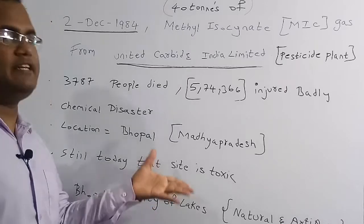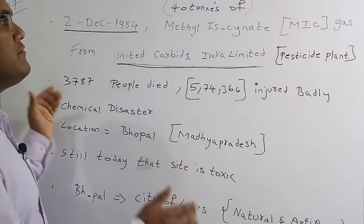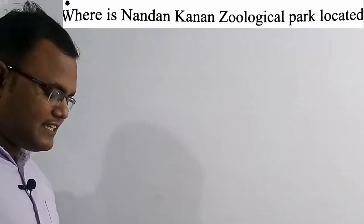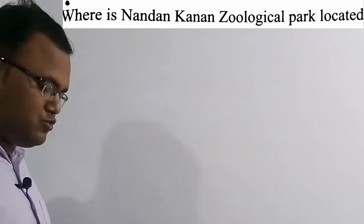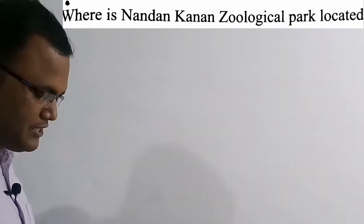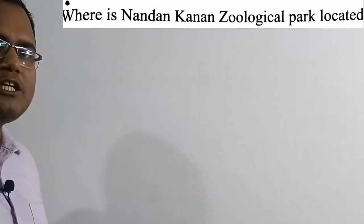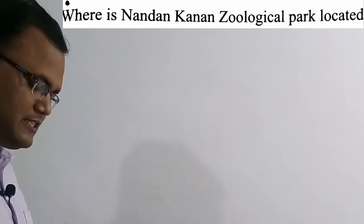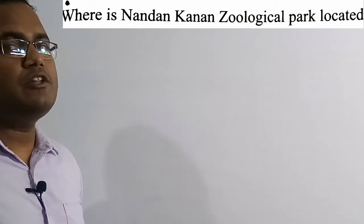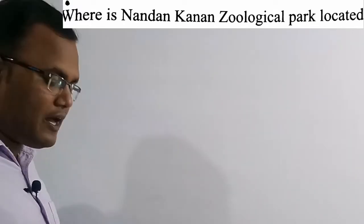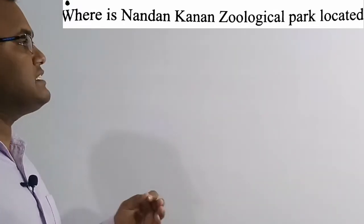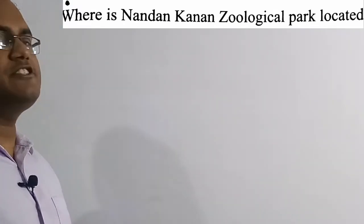Now the 38th question: Where is Nandan Kanan Zoological Park located? Option A: Odisha, Option B: West Bengal, Option C: Assam, Option D: Jharkhand. The correct answer is Option A — Odisha.